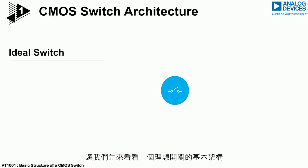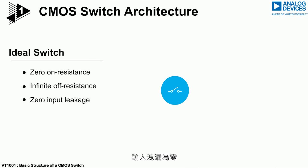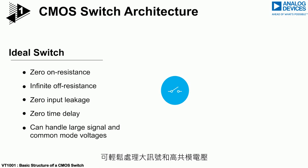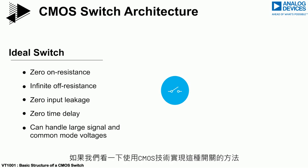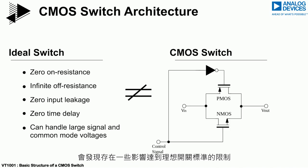Let us first take a look at the basic architecture of an ideal switch. It has zero on resistance, infinite off resistance, zero input leakage, zero time delay, and can easily handle large signal and common mode voltages. If we look at the implementation of such a switch using CMOS technology, some limitations will exist that impact achieving the criteria of an ideal switch.